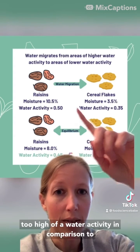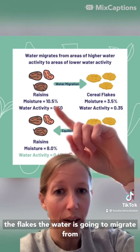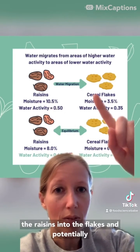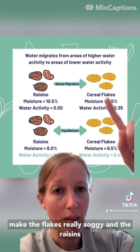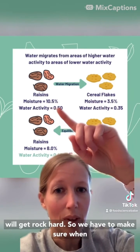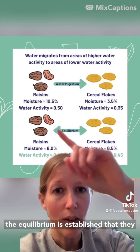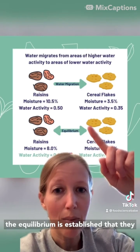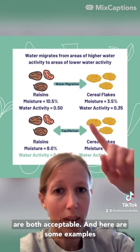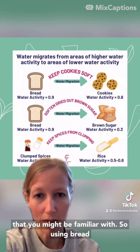For example, if raisins have too high of a water activity in comparison to the flakes, the water is going to migrate from the raisins into the flakes, potentially making the flakes really soggy while the raisins get rock hard. So we have to make sure that when equilibrium is established, they're both acceptable.